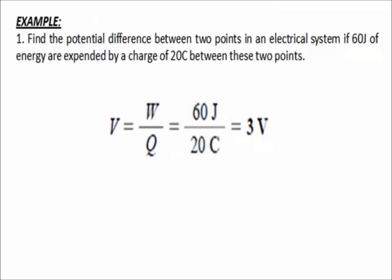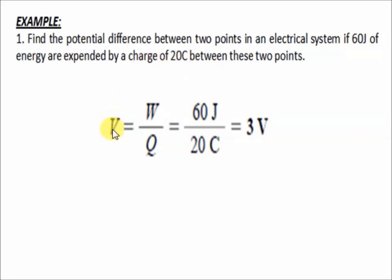Now let's answer some problems about voltage. In problem number 1: find the potential difference between two points in an electrical system if 60 joules of energy are expended by a charge of 20 coulombs between these two points. The given is: work = 60 joules and charge = 20 coulombs. Using V = W/Q = 60 joules over 20 coulombs, the answer is 3 volts.